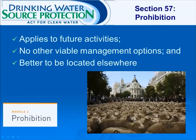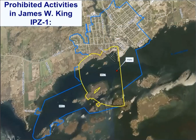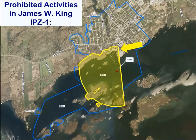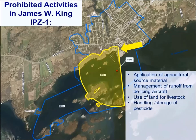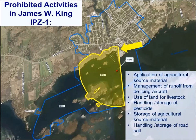The yellow arrow points to Intake Protection Zone 1, which is a set distance from the end of the intake pipe in the St. Lawrence River for the James W. King Intake Protection Zone. The activities prohibited from becoming established in the future as per Policy 7.5.3 include: the application of agricultural source material to land; the management of runoff containing chemicals used in de-icing of aircraft; the use of land for livestock grazing or pasturing, an outdoor confinement area or farm animal yard; the handling and storage of more than 2,500 kg or litres of pesticide containing MCPA or mecoprop at a facility where it is sold or used; the storage of agricultural source material; the handling and storage of more than 5,000 tons of road salt in a manner that may result in exposure to precipitation, runoff, or snow melt; and at or above-grade snow storage that is more than 1 hectare.